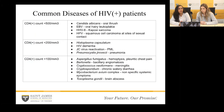The opportunistic infections a patient is predisposed to depend on their CD4 count. With a CD4 count less than 500, they are at risk for Candida albicans causing oral thrush — which was the white plaques in our patient — Epstein-Barr virus causing oral hairy leukoplakia, HHV-8 which can cause Kaposi's sarcoma, or HPV which can lead to squamous cell carcinoma at sites of sexual contact.